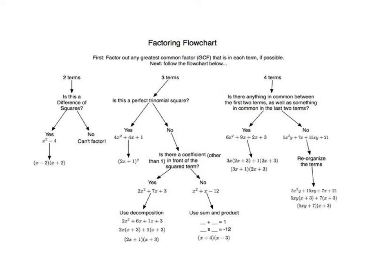Once you've removed the GCF, evaluate how many terms remain in the polynomial. Are there two terms, three terms, or four terms? Based on the number of terms, you can decide what type of factoring might be appropriate.